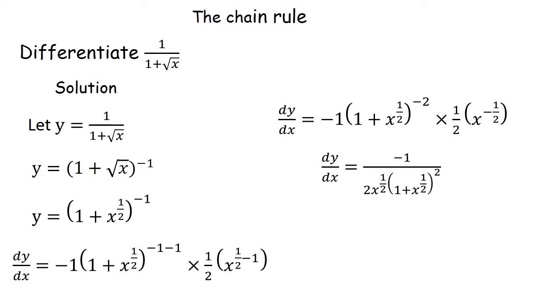Even this one. So that is why here we have negative 1 divided by 2 x to the power half, then bracket 1 plus x to the power half, then everything squared. So this would be the derivative of 1 divided by 1 plus root of x.